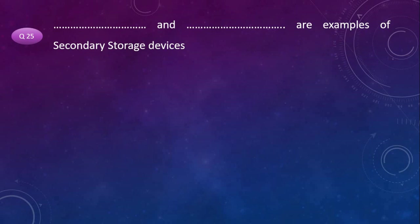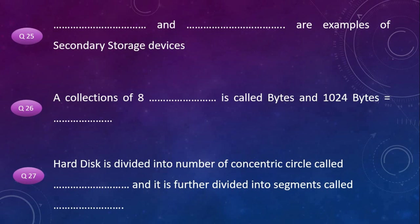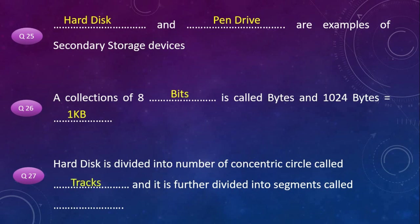Hard disk and pen drive – along with floppy disk, CD, and DVD – are examples of secondary storage devices. A collection of 8 bits is called a byte, and 1024 bytes is equal to 1 kilobyte. Hard disk is divided into concentric circles called tracks, which are further divided into segments called sectors.